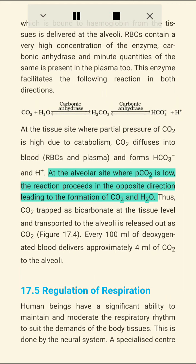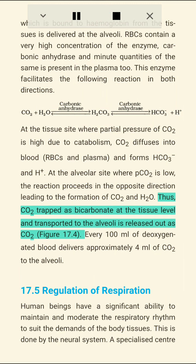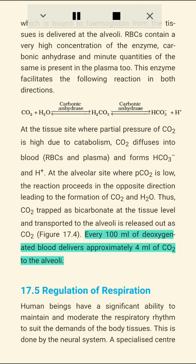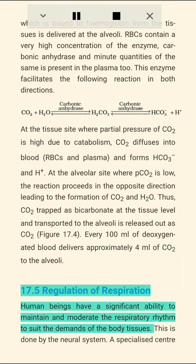At the tissue site where partial pressure of CO2 is high due to catabolism, CO2 diffuses into blood RBCs and plasma and forms HCO3⁻ and H⁺. At the alveolar site where pCO2 is low, the reaction proceeds in the opposite direction, leading to formation of CO2 and H2O. Thus CO2 is trapped as bicarbonate at the tissue level, transported to the alveoli, and released out as CO2. Every 100 mL of deoxygenated blood delivers approximately 4 mL of CO2 to the alveoli.